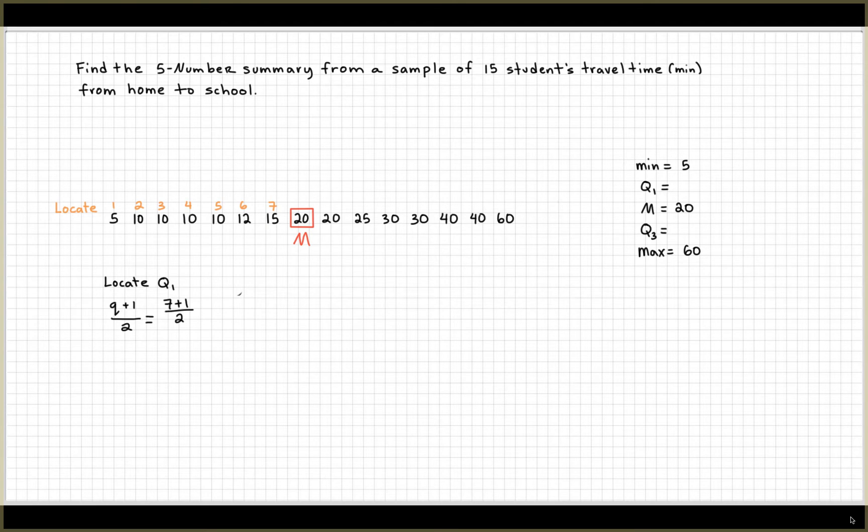So Q will be seven. We're going to add one divided by two and we're going to get four. This four is the fourth position of our data set, and that means that Q1 is 10. So now our Q1 is 10.